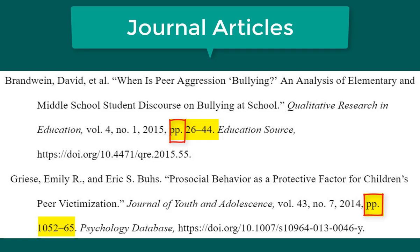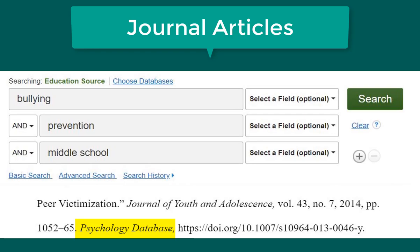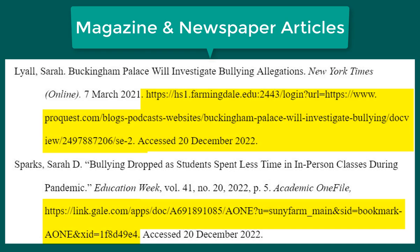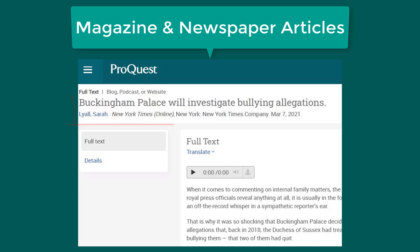Then the name of the database is listed in italics. The database name can be found at the top of the page when searching. Then add a comma and the DOI. Magazine and newspaper articles follow a similar format. If articles do not have a DOI, include the URL or permalink instead, followed by the date that you accessed the article. Like journal articles, citation information for magazine and newspaper articles might be found at the top or at the bottom of the page.